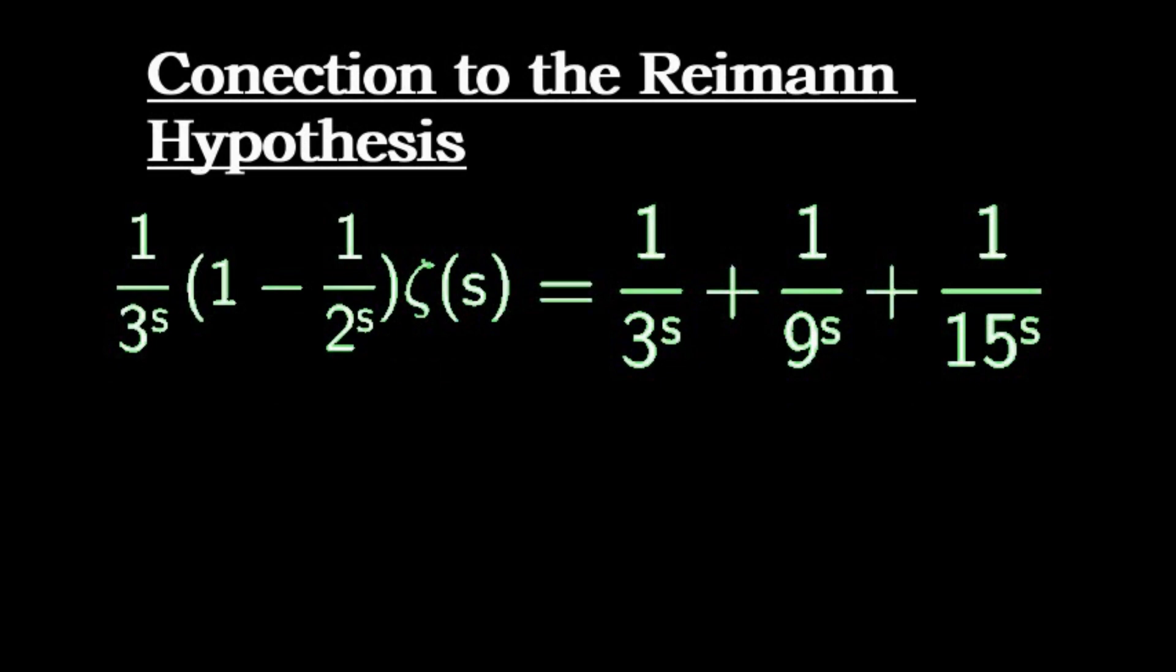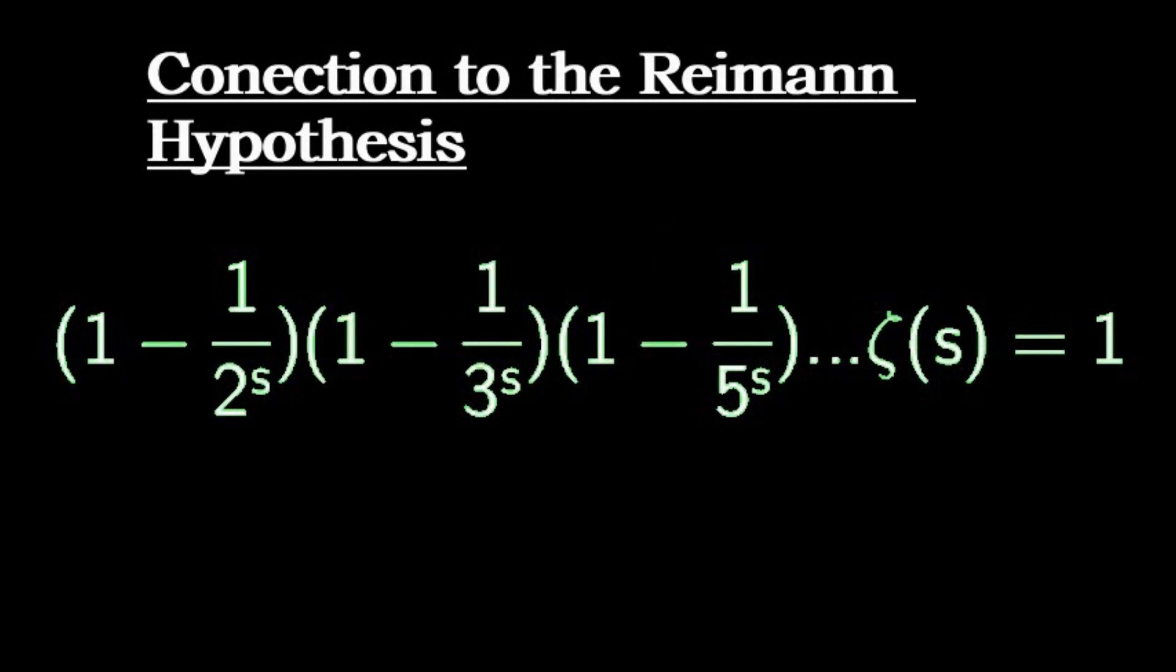So we can do the same thing for 3. And when we are done, we would have removed all multiples of 3. We can do the same thing for 5, 7, 11, and all prime numbers. And when we are done, on the right hand side, we have no multiples of primes left. So the only number left is 1.